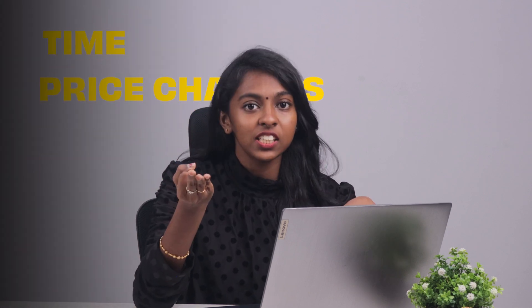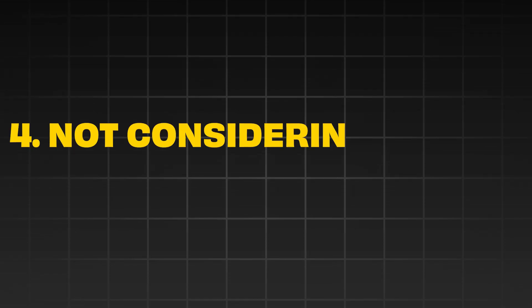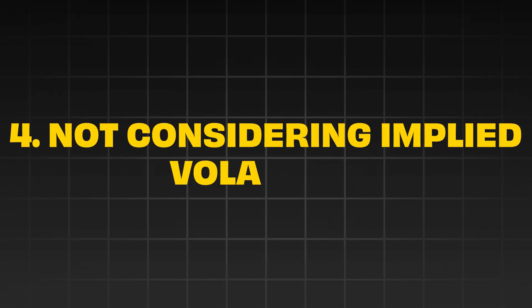Mistake number three: overlooking option Greeks. Option prices fluctuate constantly due to factors like delta, gamma, theta, and vega, which are all known as Greeks. These Greeks represent how sensitive the position is to time, price changes, and volatility.